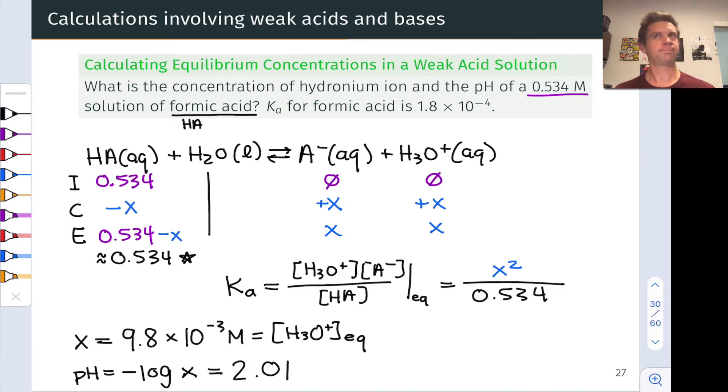Does this make sense? Yes it does. Formic acid is a weak acid, we can tell by its pKa, so the pH should be less than 7 but should not correspond to the negative base 10 logarithm of 0.534, which would be less than 2.01. That would correspond to a strong acid. This is looking good—we've got a pH less than 7 in the weak acid range given this concentration and Ka.